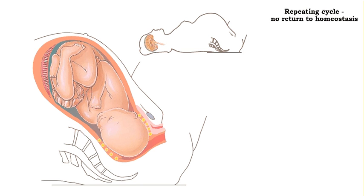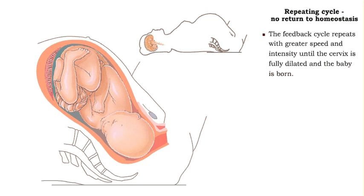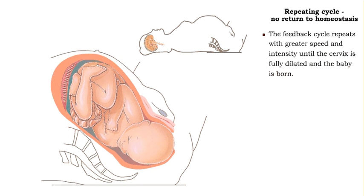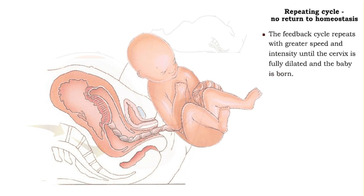The self-amplifying nature of the positive feedback loop is repeated over and over with increasing intensity until the baby is born. After the birth of the baby, the stretching is halted and the positive feedback loop ceases.